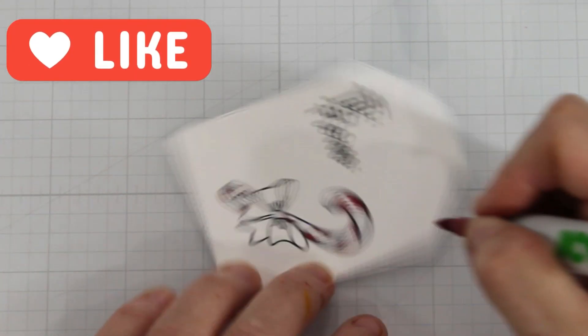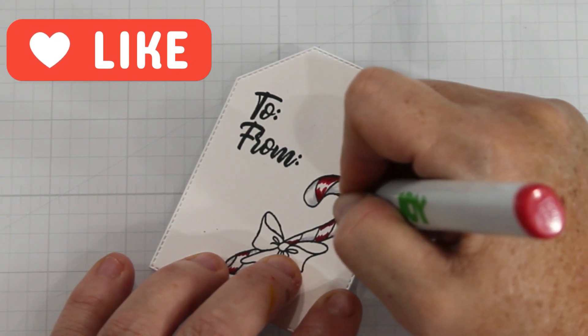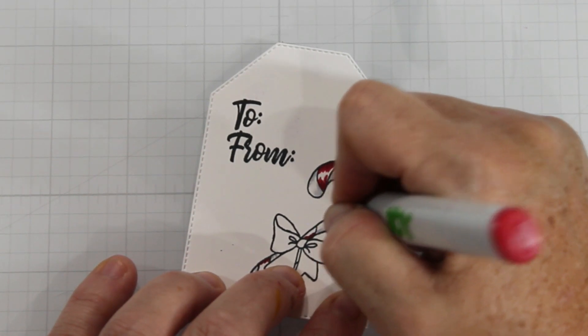Next I come in with the R29 and I feather that in extending that shadow still leaving a lot of white space. From there I will come in with an R24.